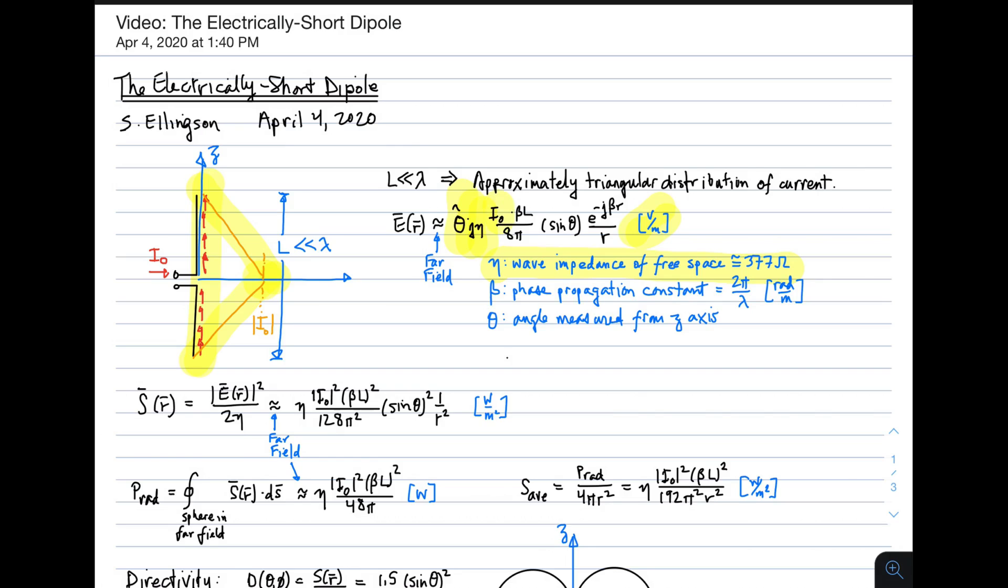I naught, there's where the current's coming in. Beta times L. Beta is the phase propagation constant. That's 2 pi over lambda. That has units of radians per meter and SI base over 8 pi. Sine theta. There is what we refer to as the pattern factor. That's saying that the electric field intensity is greatest in the broadside direction. And it goes to zero along the z-axis.